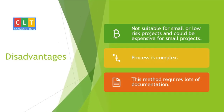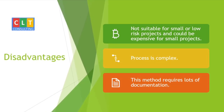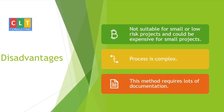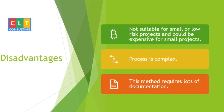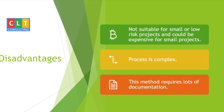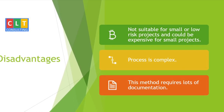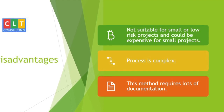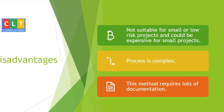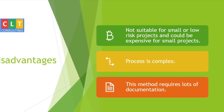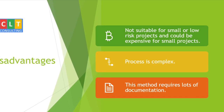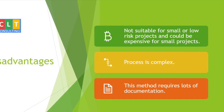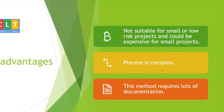The disadvantages of the Spiral Model are: it is costly to use for small projects, the process is very complex, it requires a lot of documentation, and the project's success is highly dependent on the risk analysis.